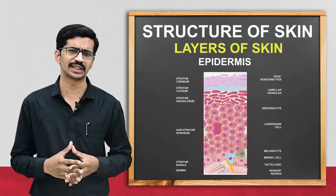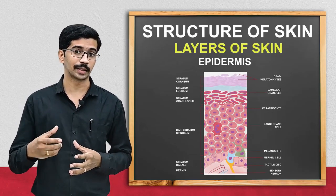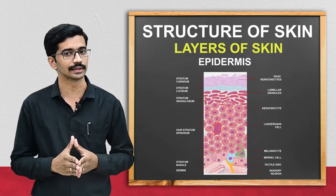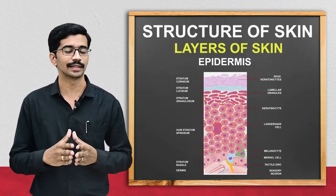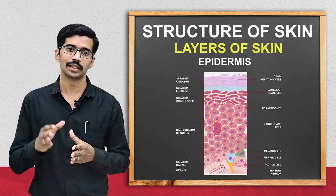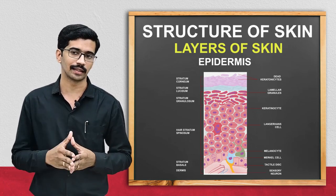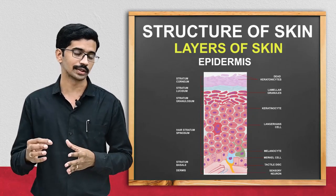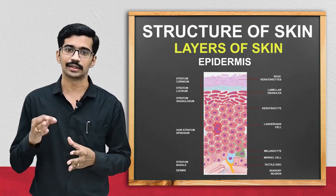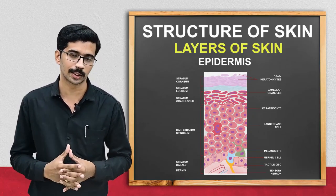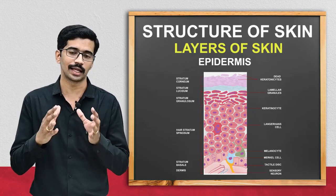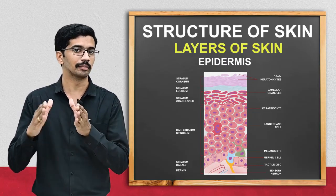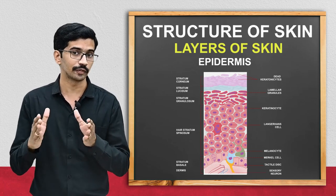The first and outermost layer is the stratum corneum. This layer is keratinized, meaning it contains a substance called keratin, which is proteinaceous in nature. Keratin helps the skin maintain its waterproof nature.